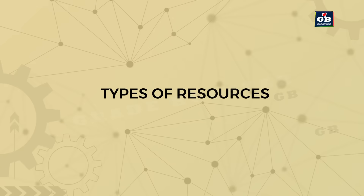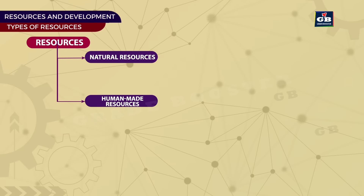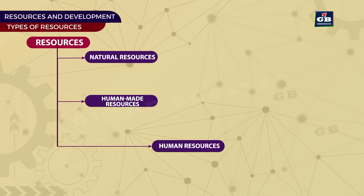Types of Resources. Resources are categorized into three main types: Natural Resources, Human-made Resources, and Human Resources.